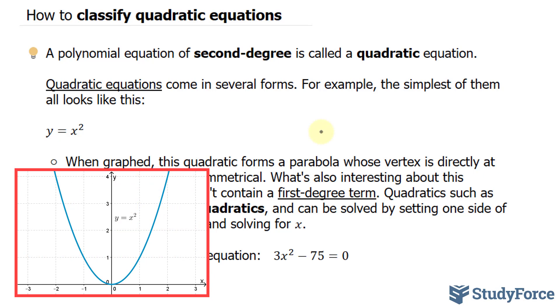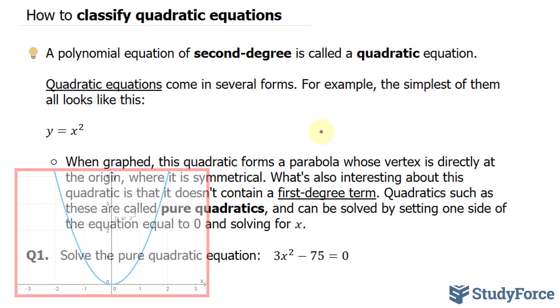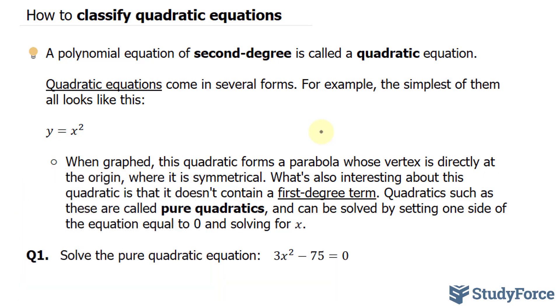When graphed, this quadratic forms a parabola whose vertex is directly at the origin where it's symmetrical. What's also interesting about this quadratic is that it doesn't contain a first degree term.